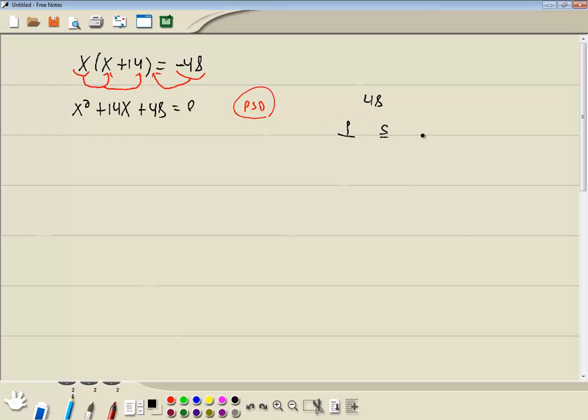And we come up with three columns. P column, an S column, and a D column. In the P column, we're going to write down all the products to give us 48. We've got 1 times 48, 2 times 24, 3 times 16, 4 times 12, and 6 times 8.